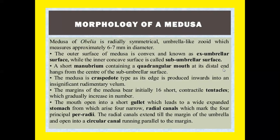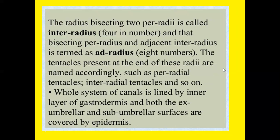The medusa is a craspedote type as the edge is produced inward into an insignificant rudimentary velum. The margin of the medusa bears initially 16 short contractile tentacles which gradually increase in number. The mouth opens into a short gullet leading to a wide stomach, from which arise four narrow radial canals marking the four principal perradii. The radial canals extend to the margin of the umbrella and open into a circular canal running parallel to the margin. The radius bisecting two perradii is called the interradius (four in number), and that bisecting a perradius and adjacent interradius is the adradius (eight in number). The tentacles at the margin are named accordingly as perradial, interradial, and adradial tentacles.